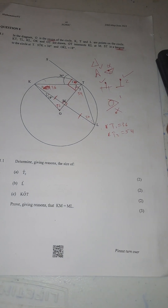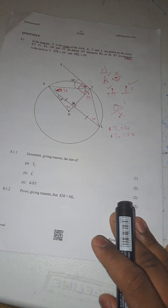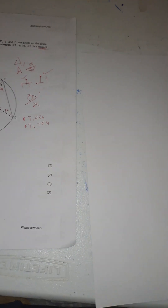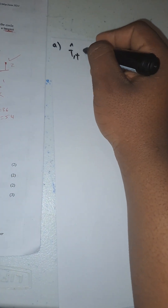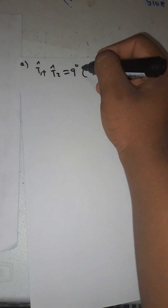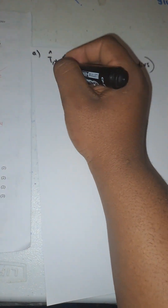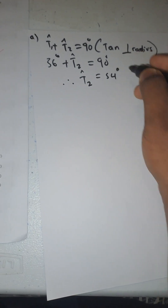Now let's go straight to the questions. Question 8.1.1: find angle T2. I'll start by writing: angle T1 plus angle T2 equals 90 degrees — reason: tan-rad, tangent perpendicular to a radius. T1 was given as 36 degrees, so T2 equals 90 minus 36, therefore T2 equals 54 degrees.